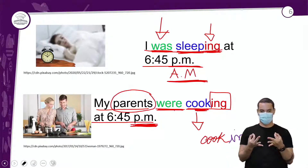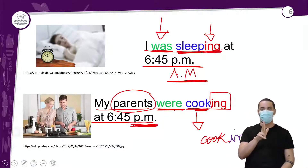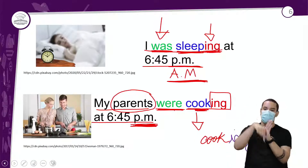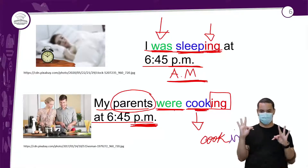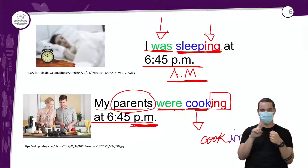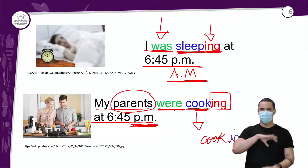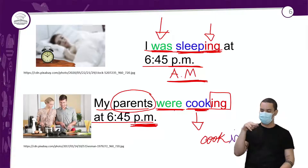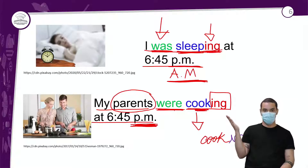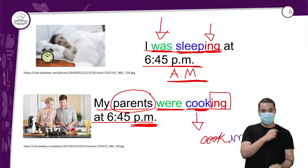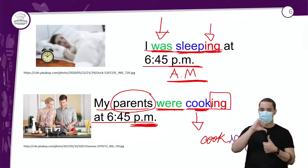O -ing vai ser usado com todos os pronomes pessoais — não vai ter essa mudança como existe no português. 'Cooking' é cozinhando: eu estava cozinhando, você estava cozinhando. O português também não muda, nesse caso.